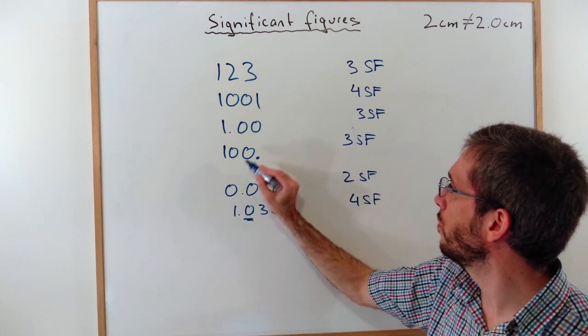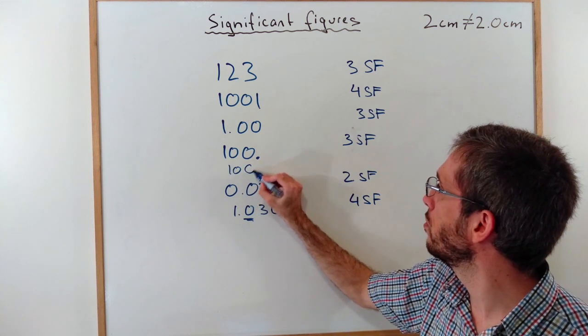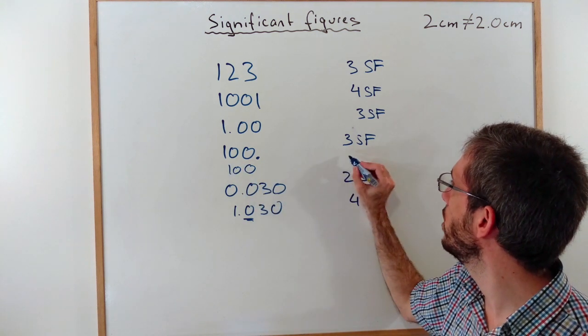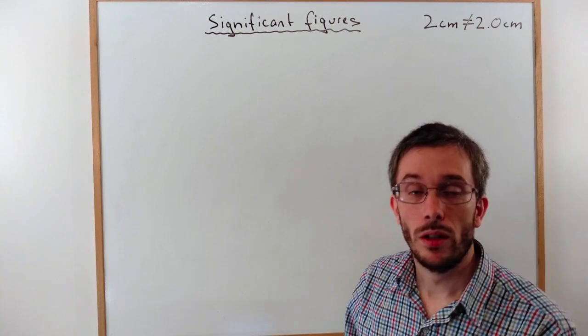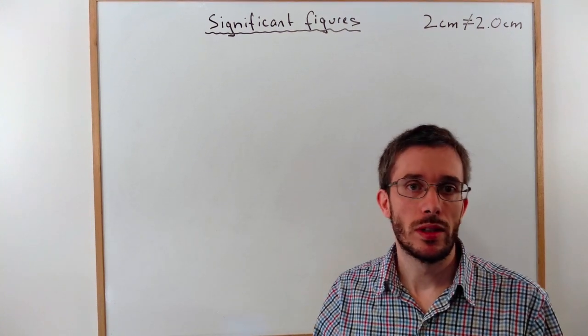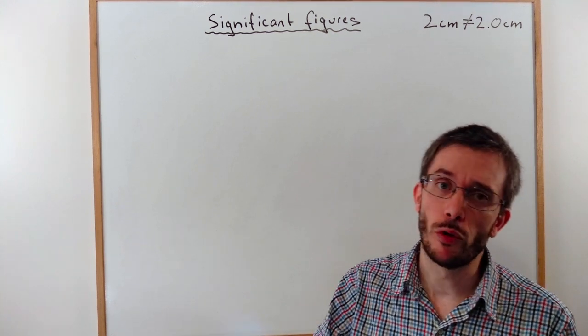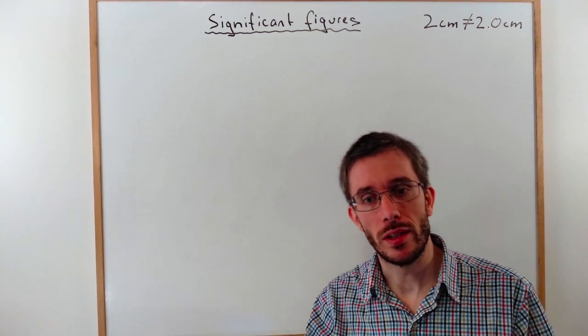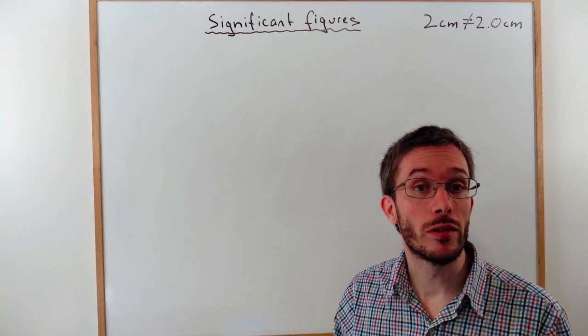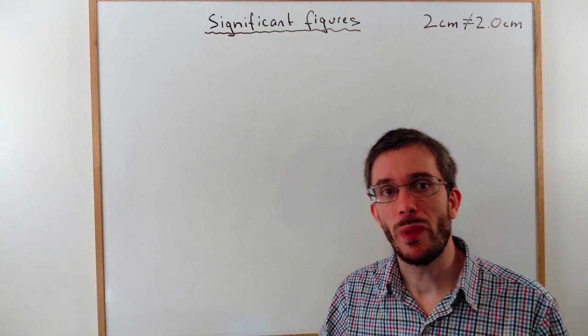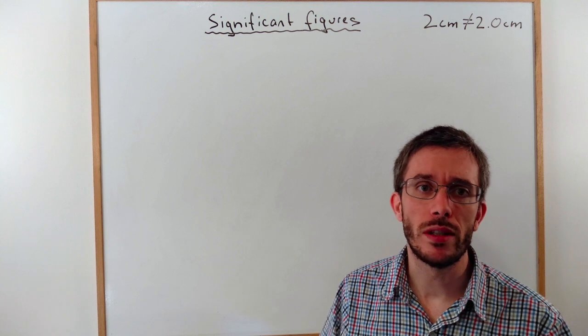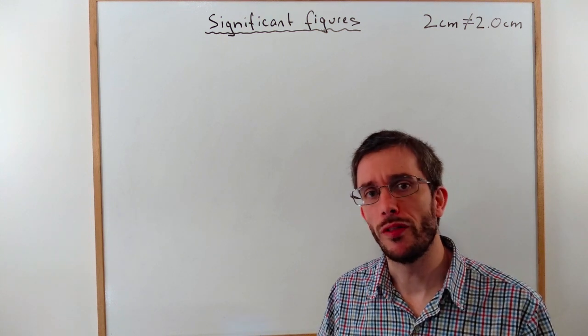And as I wrote before, 100 without a point would only be one significant figure. Now, why do we need to count significant figures or be able to count significant figures? First if we convert from one set of units into the other or if we convert into scientific notation. Just by converting it, we are not increasing or decreasing the precision of the measurement.